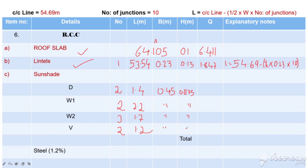So we are going to get the number of extensions with a 10 cm bearing. We are going to calculate all the quantities of RCC. So we get 8.753 m³.